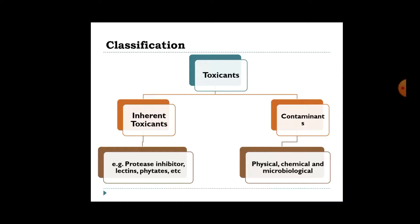Next are contaminants. There are three types of contaminants: physical, chemical, and microbiological. So this is how toxicants can be classified.